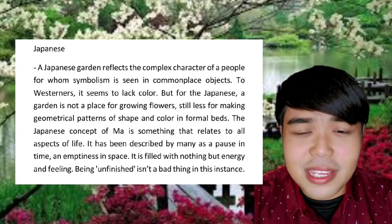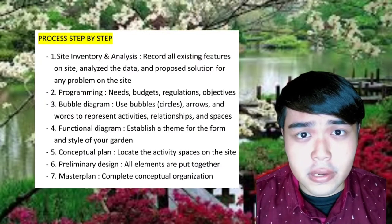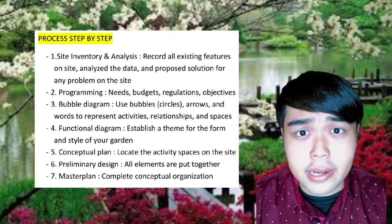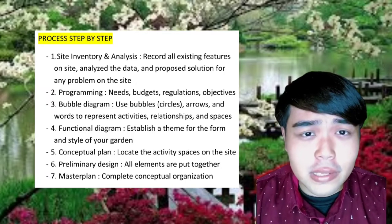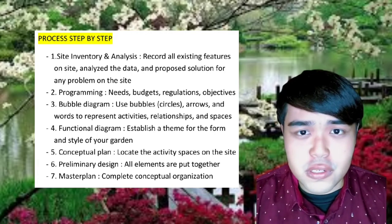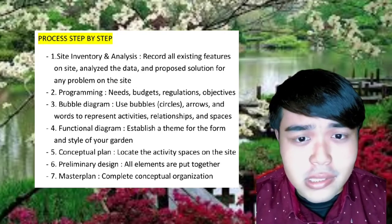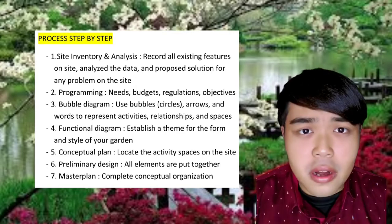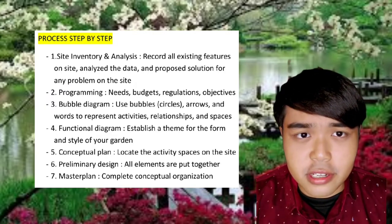Being unfinished isn't a bad thing in this instance. The step-by-step process: first is site inventory and analysis — record all existing features on a site, analyze the data, and propose solutions for any problems. The second is programming — we need to adjust the needs, budgets, regulations, objectives, and so on. The third is a bubble diagram — use bubble circles, arrows, and words to represent activities, relationships, and spaces.